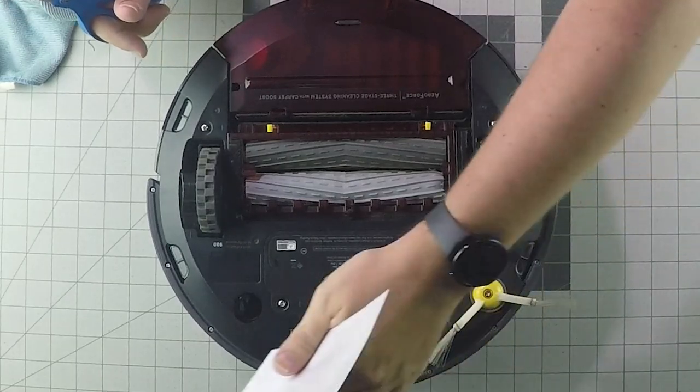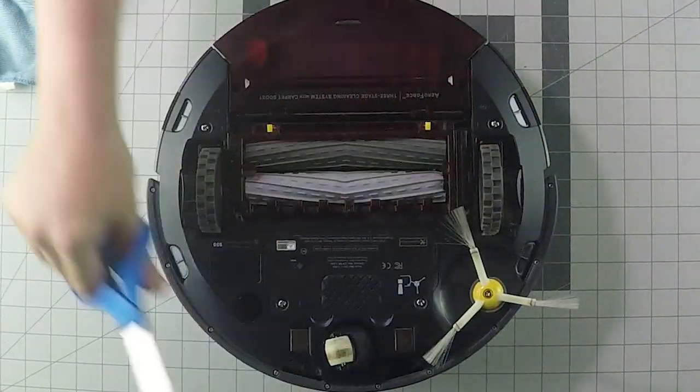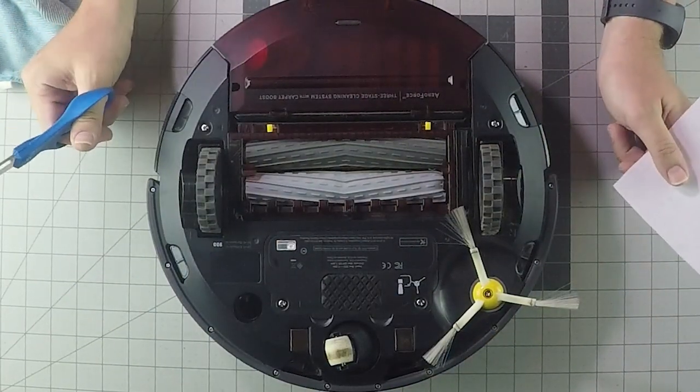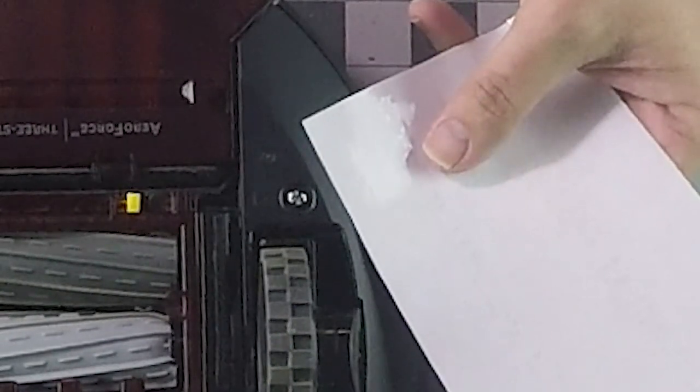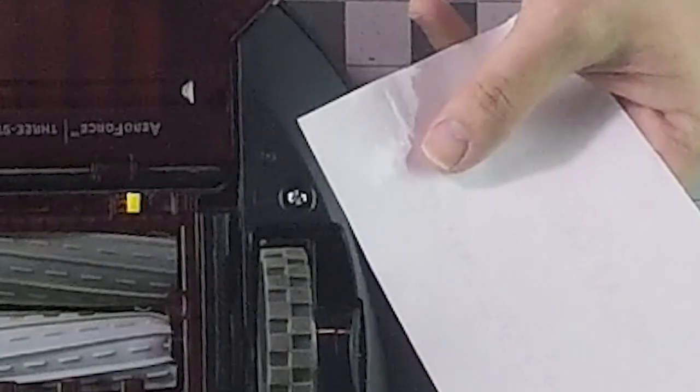So I'm going to cover these one, two, three, four, five, six sensors. This is on Roomba 980. Most of them should be very similar to this. And we're going to cut pieces that are bigger than the entire hole there, but not too much bigger. And then we're going to tape them all to each of these pieces.